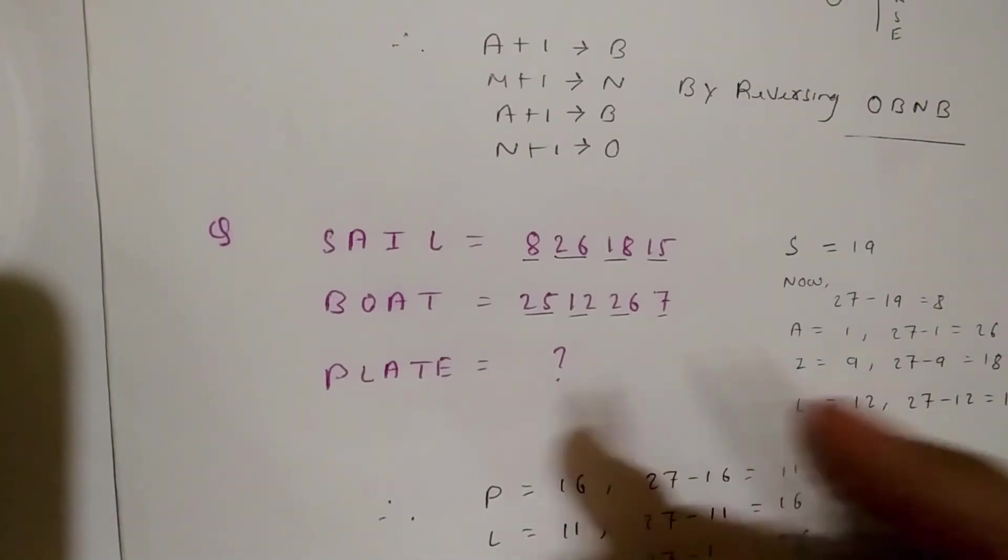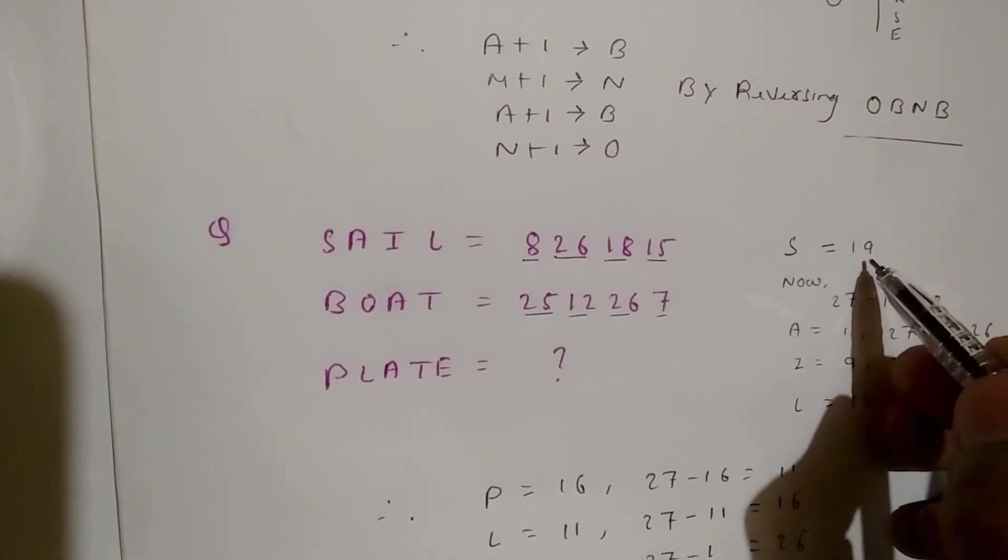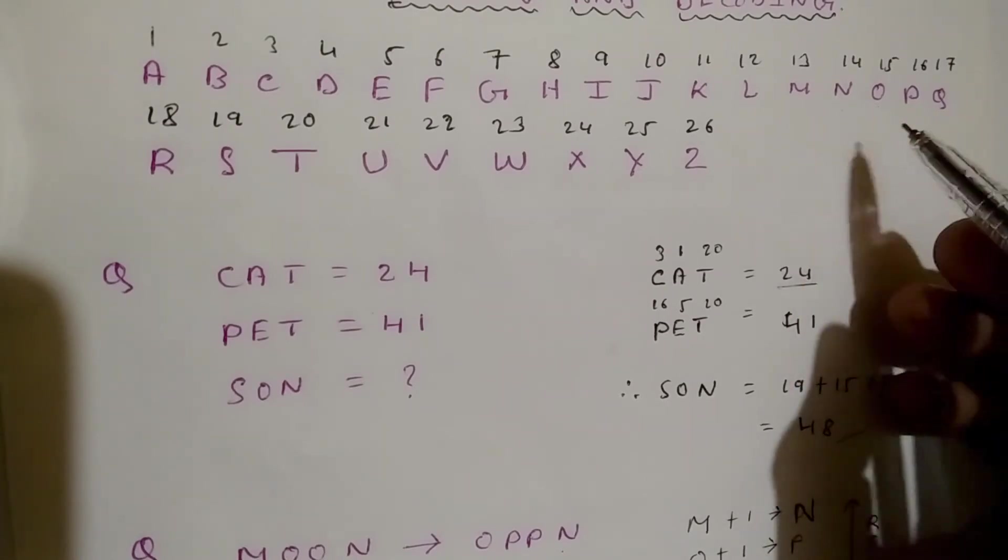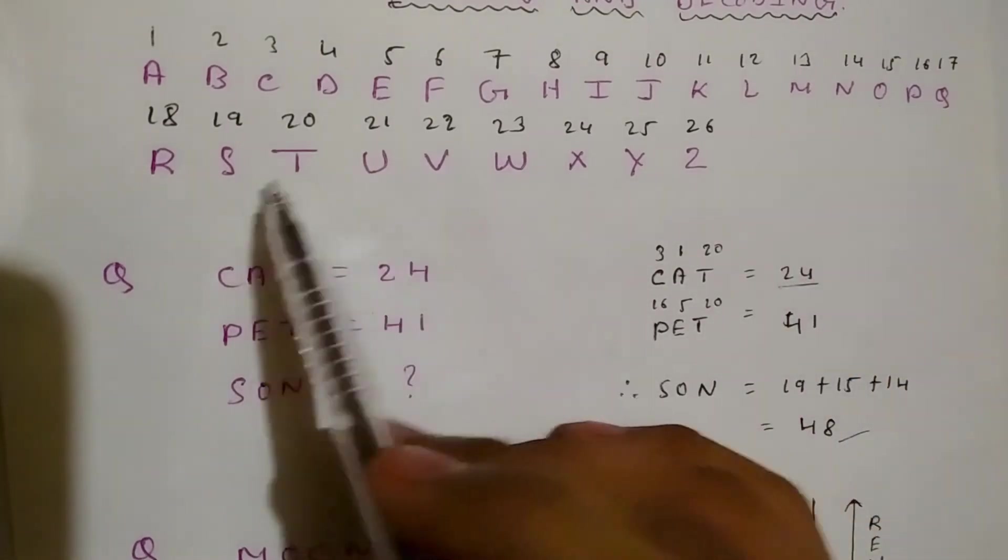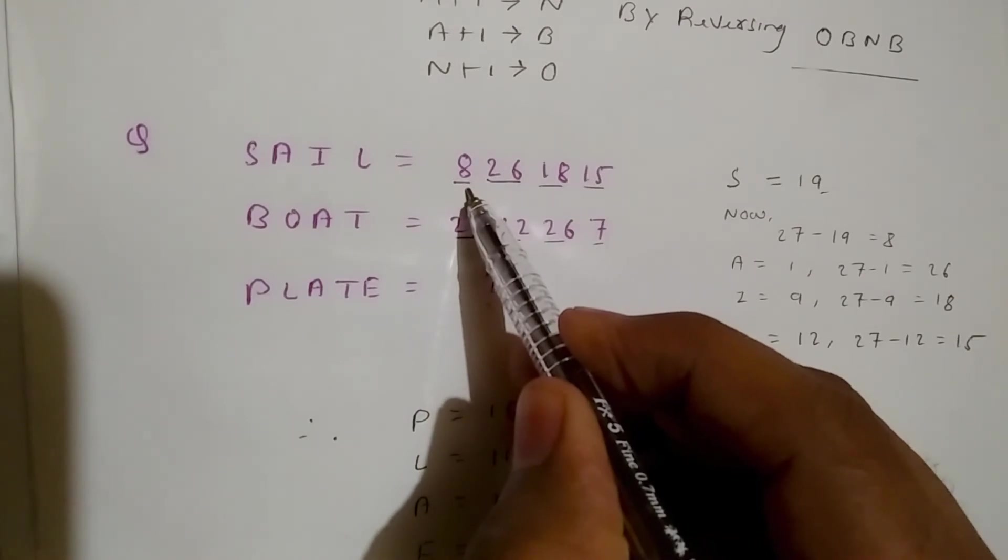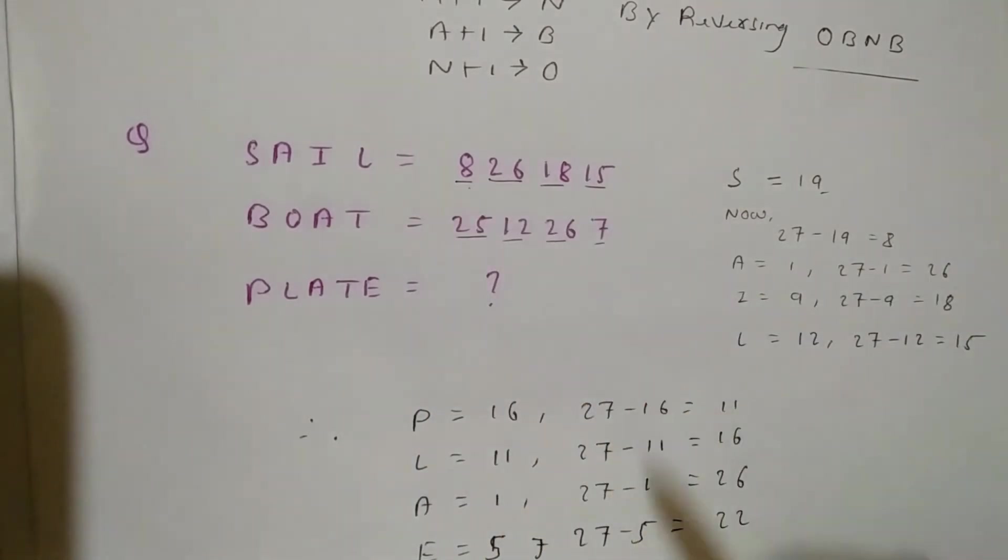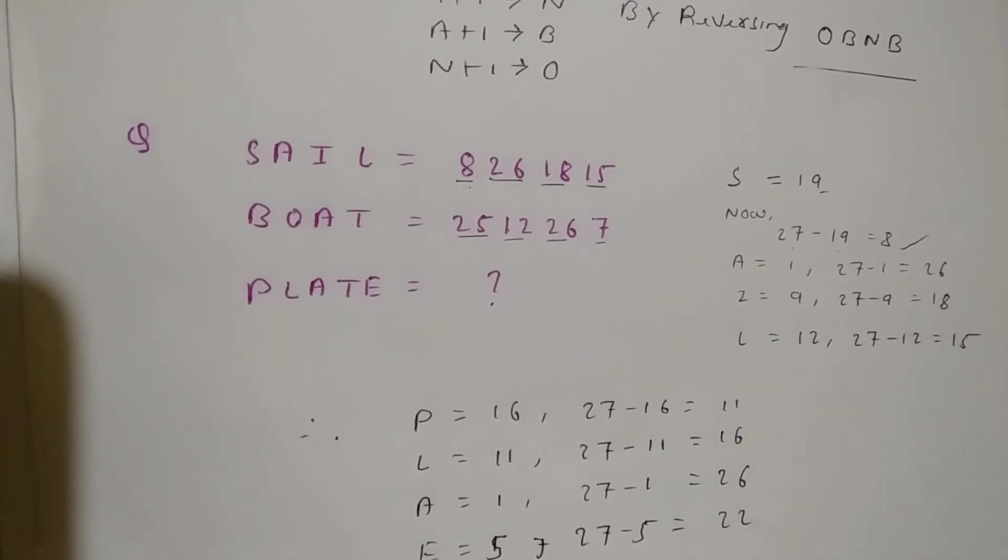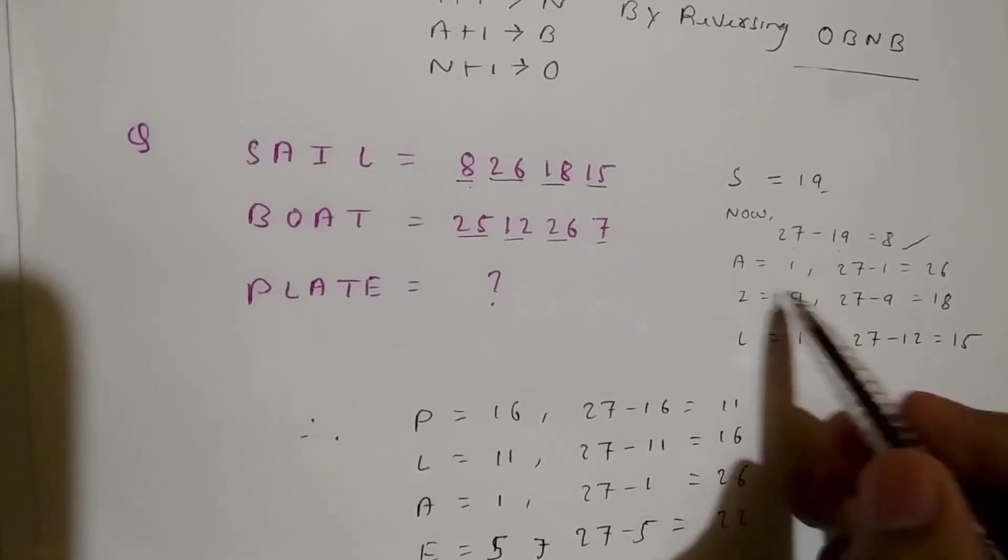Suppose S equals what? It is 19. S equals 19. So what we can do is find how S becomes 8. S will be 8 by subtracting 27 minus 19, we get 8. In the similar way, we subtract all of this.